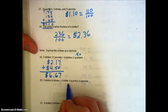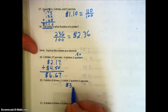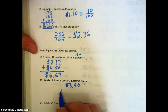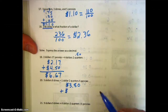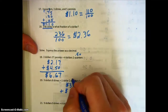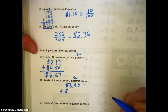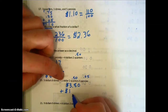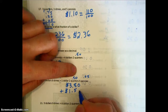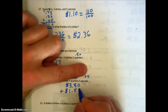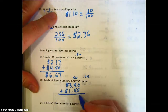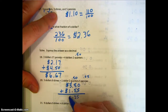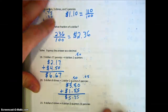Next, we have three dollars and eight dimes, which is eighty cents. Our second number has a few amounts: one dollar, plus two quarters, plus five pennies, which means we have one dollar and fifty-five cents. Adding up our amounts, we get five dollars and thirty-five cents.